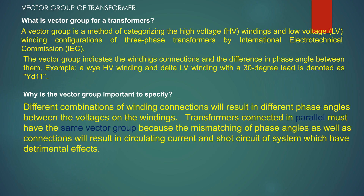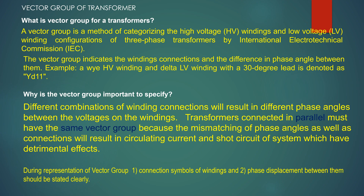Different combinations of winding connections will result in different phase angles between the voltages on the windings. Transformers connected in parallel must have the same vector group, because mismatching of phase angle as well as connections will result in circulating current and short circuit of the system, which have detrimental effects. During representation of the vector group, the connection symbol of windings and the phase displacement between them should be stated clearly.